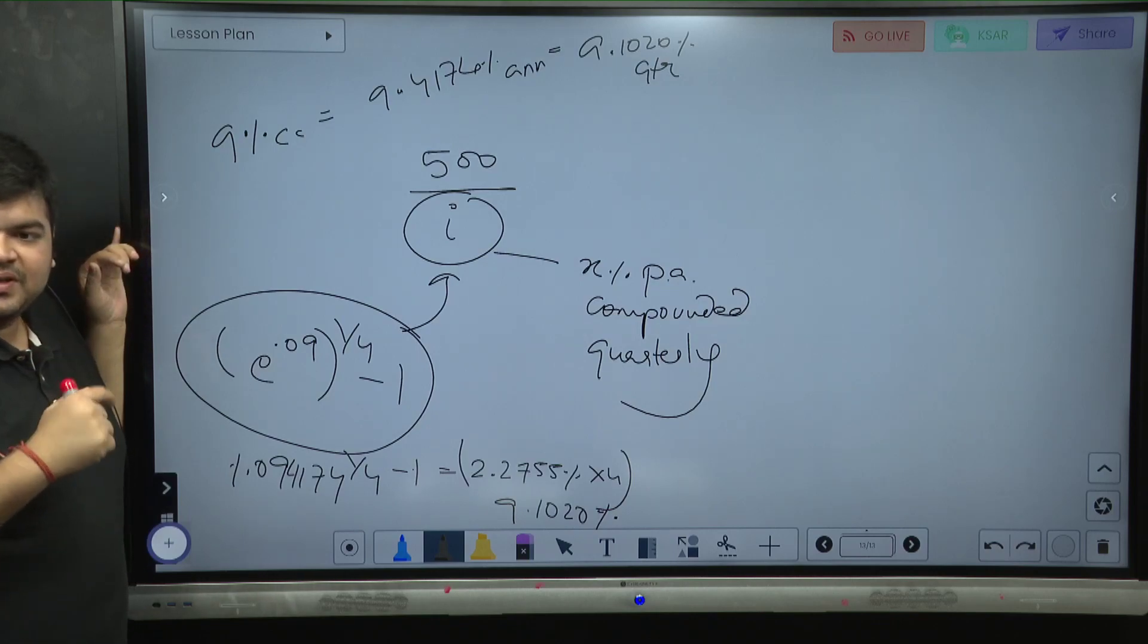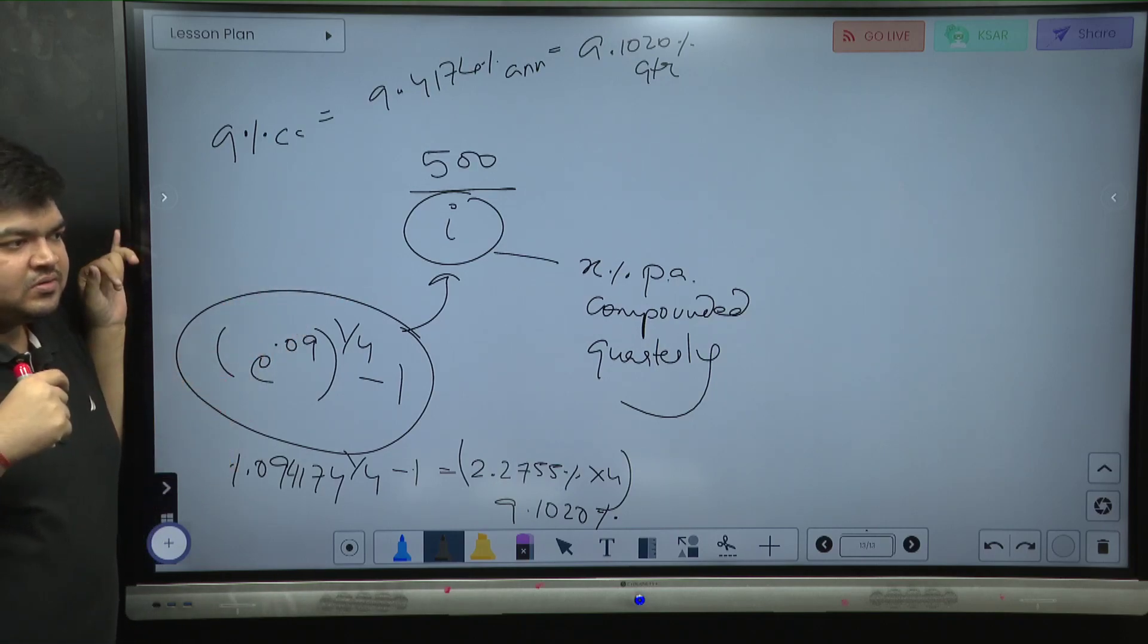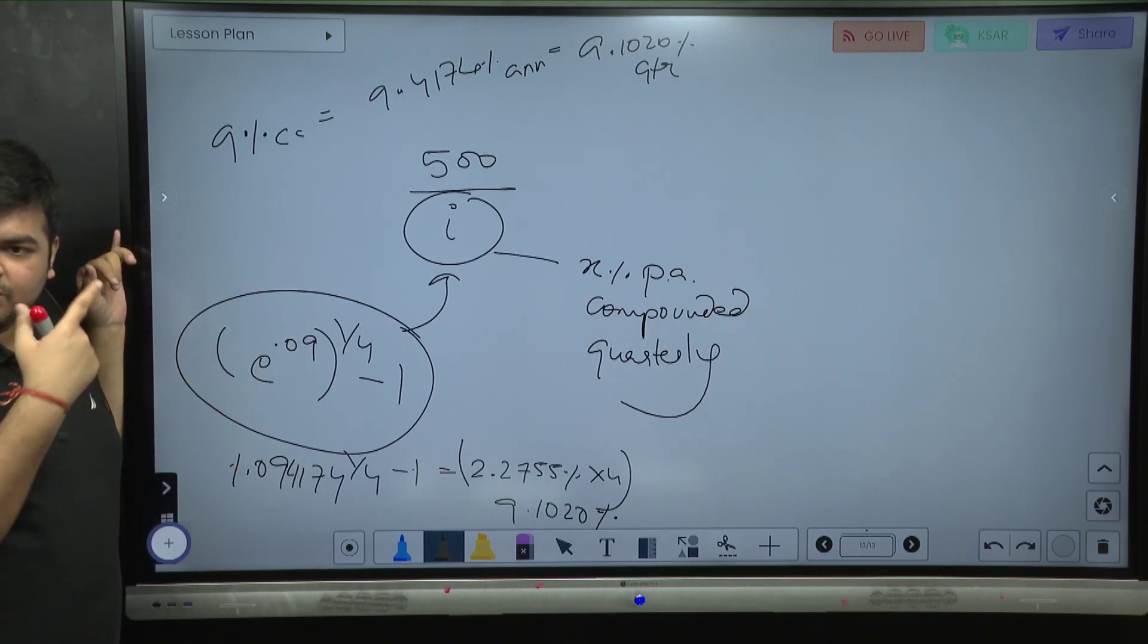9.1020 quarterly rate means one becomes 0.091020 by 4. We have to tell - i is the rate per period, and the cash flow is happening quarterly. I hope this is clear.